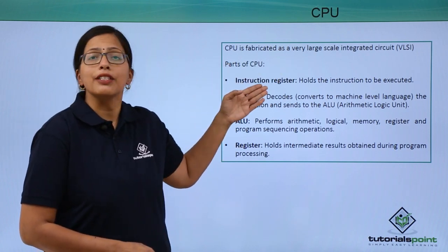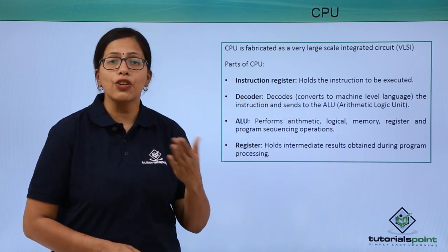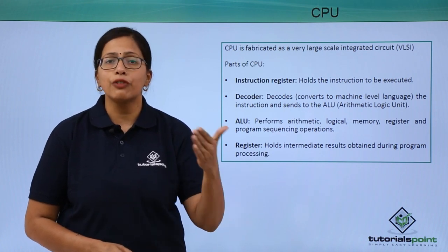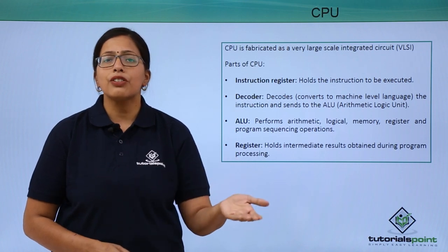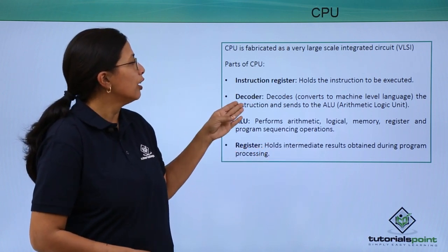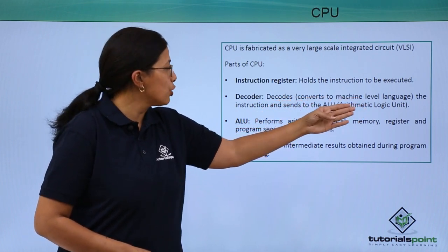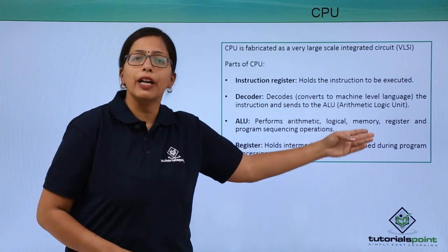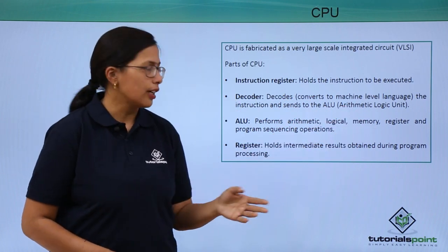These are the parts of a CPU. The instruction register holds the user instructions that are given and that have to be kept so that the program can run according to those instructions. The decoder converts the machine level language instructions and sends them to the arithmetic logic unit — that is what the decoder does.